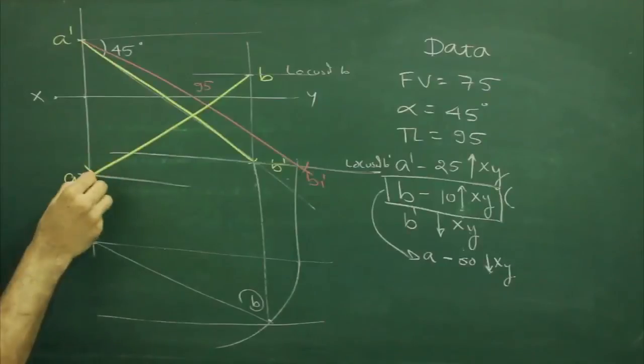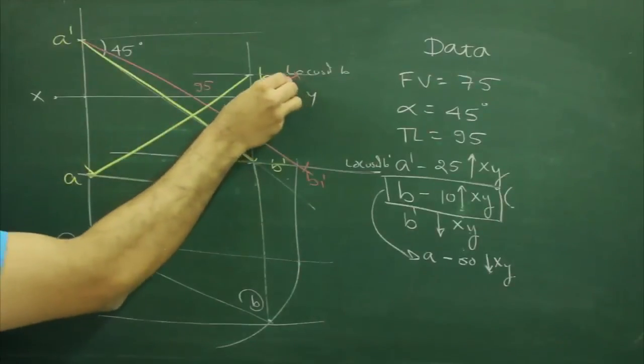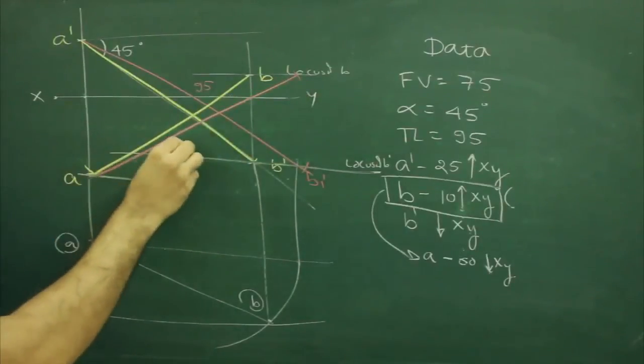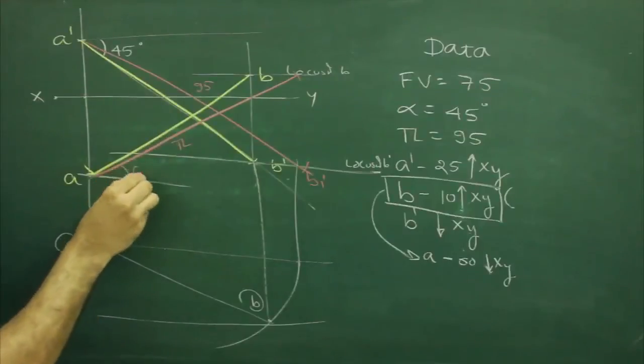I can mark true length which is 95, so from here I can mark 95, that will be true length.